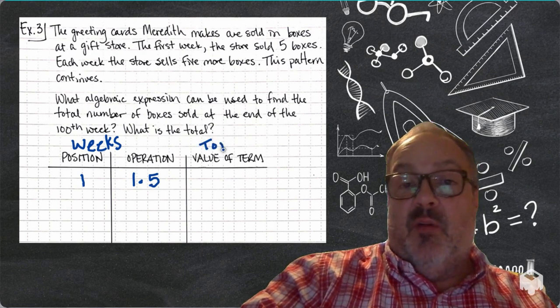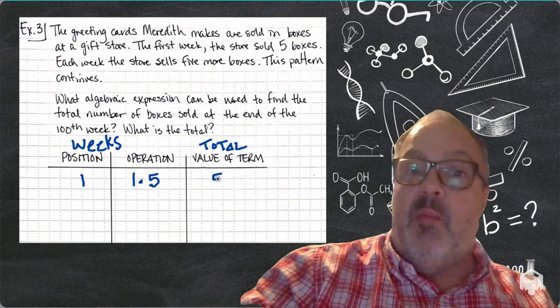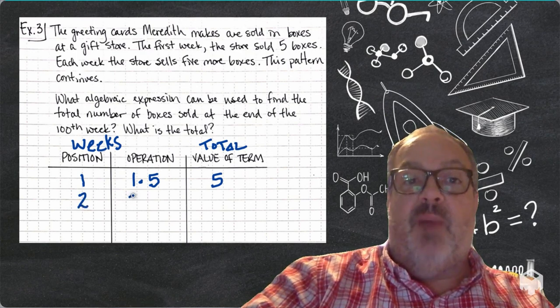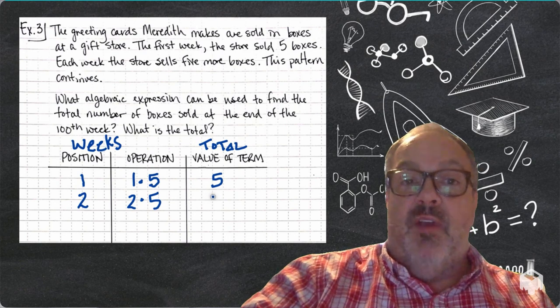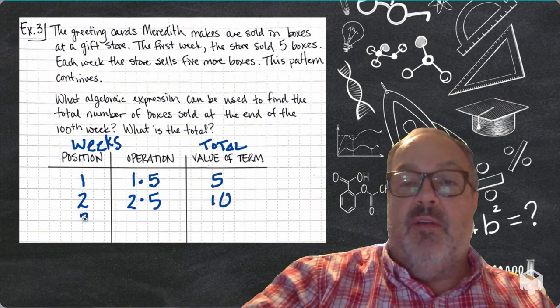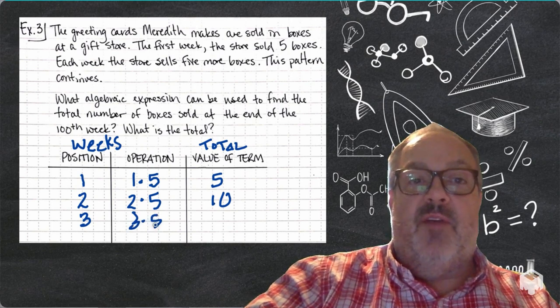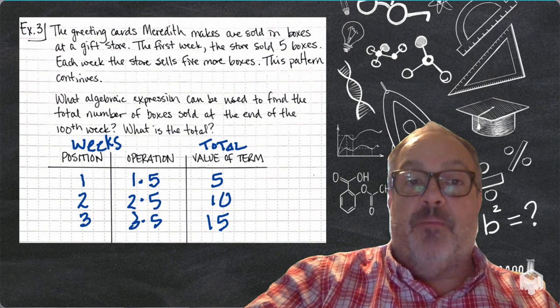I can think of the position of the number in the sequence as the number of weeks. The operation is going to be, I'm going to take that number of weeks, so week number one, and I'm going to multiply it by five, because she's going to sell five boxes. In the second week, she's going to sell two times five boxes, so ten boxes. In the third week, it'll be three times five boxes for 15 total boxes.